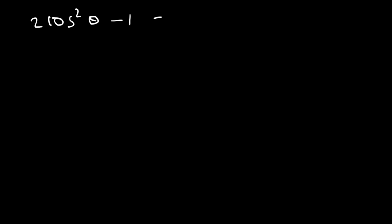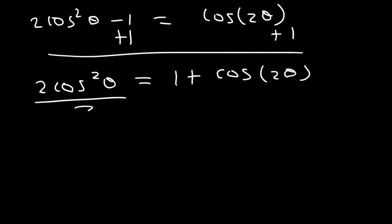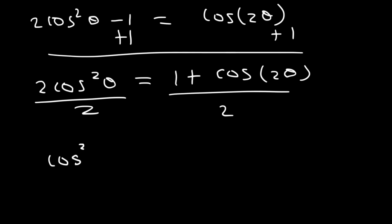Now let's start with another equation. We know that 2 cosine squared θ minus 1 equals cosine 2θ — this is the double angle formula of cosine. Let's isolate cosine squared by adding 1 to both sides, giving us 2 cosine squared θ equals 1 plus cosine 2θ. Dividing by 2, here's the power reducing formula of cosine squared: 1 plus cosine 2θ divided by 2.